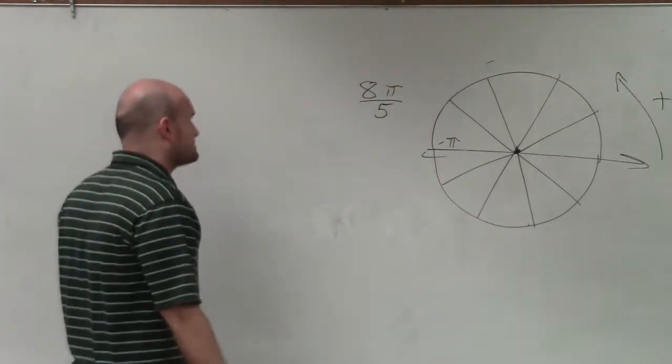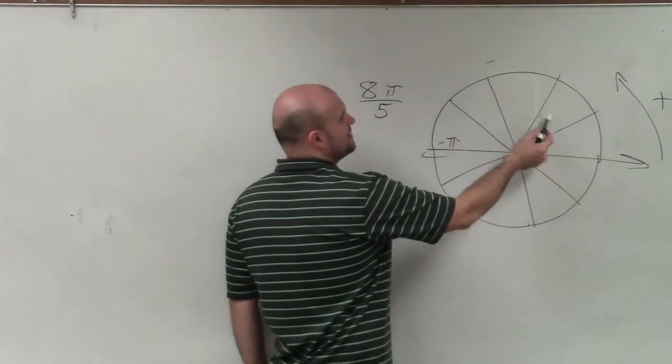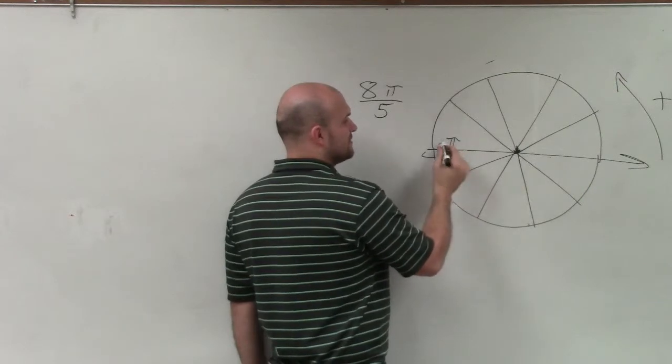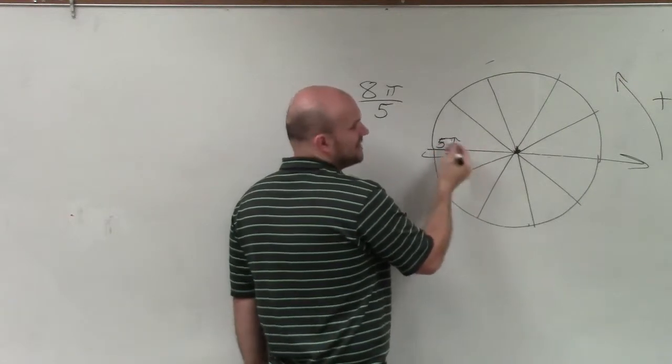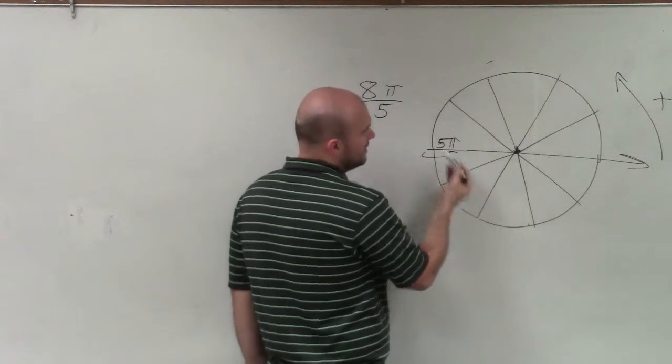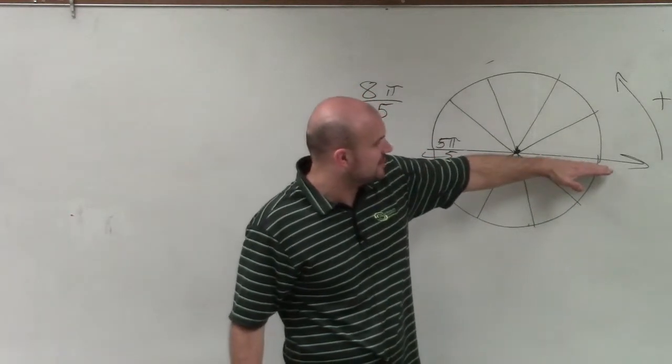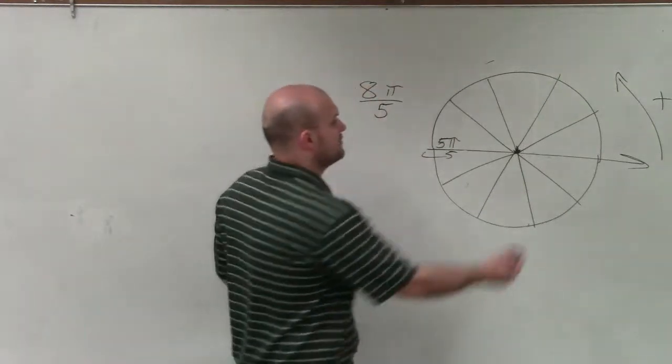So you can see that that's 1π over 5, 2π over 5, 3π over 5, 4π over 5, 5π over 5, which is the same thing as π. And then I can continue on. So now all I simply need to do is start with my angle at its standard position and then rotate at 8π over 5.